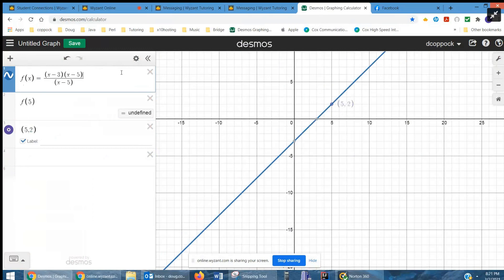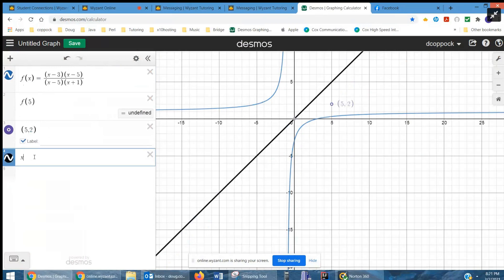The second condition is that there is a vertical asymptote at x equals negative 1. So that means that there's an x plus 1 in the denominator. And here's the vertical asymptote at x equals minus 1.